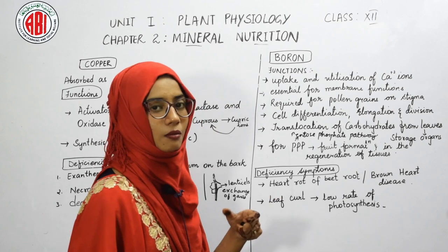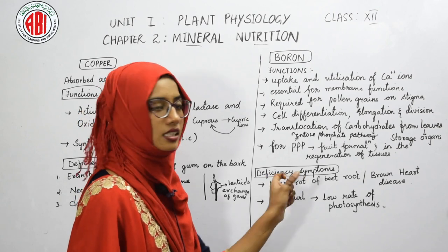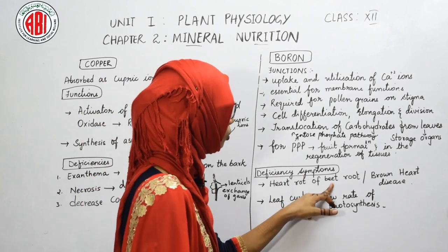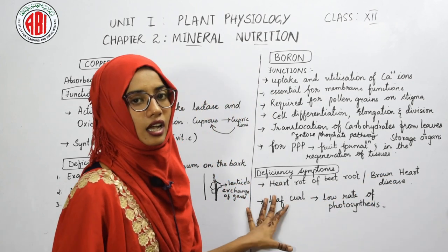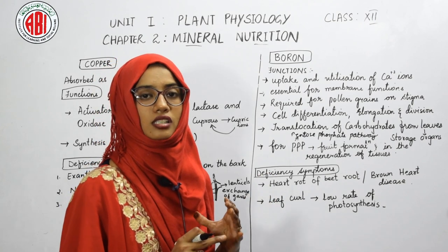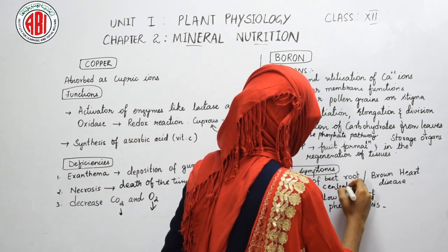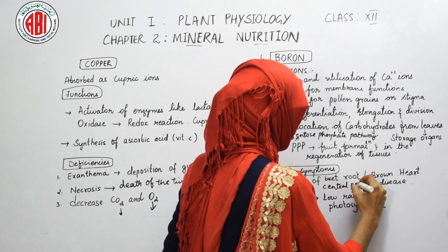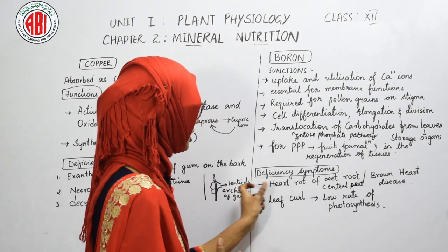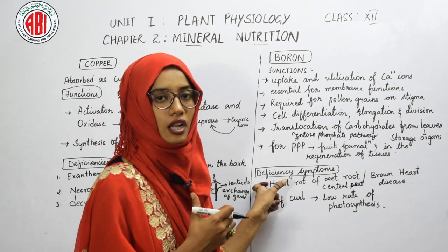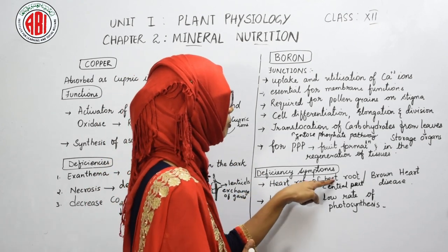A deficiency symptom of boron is heart rot of beetroot, also called brown heart disease. In this disease, the central tissues of the plant become woody. It is called 'heart' rot because the heart is located centrally, and this disease is seen specifically in beetroot plants.